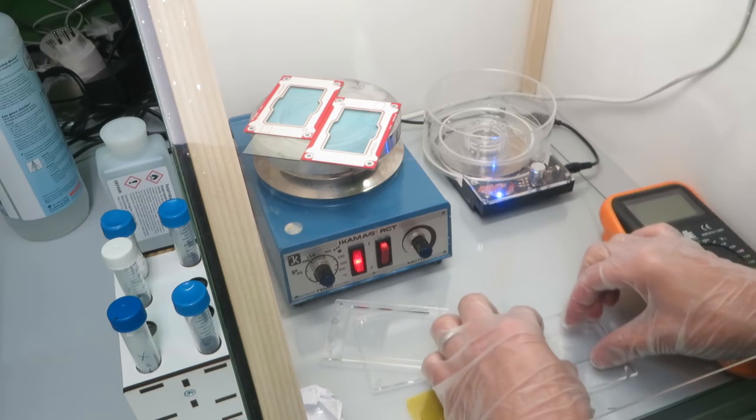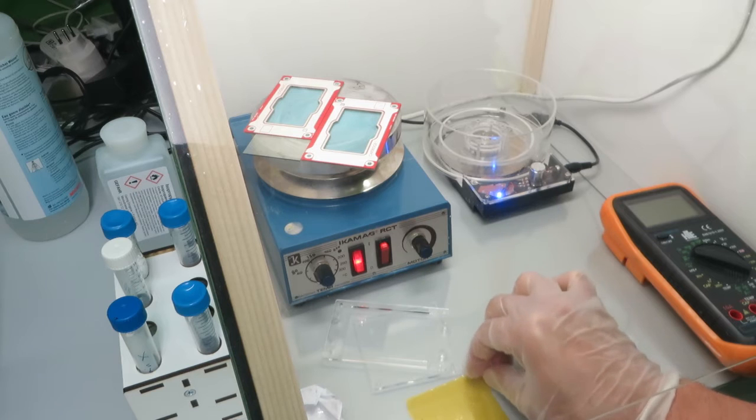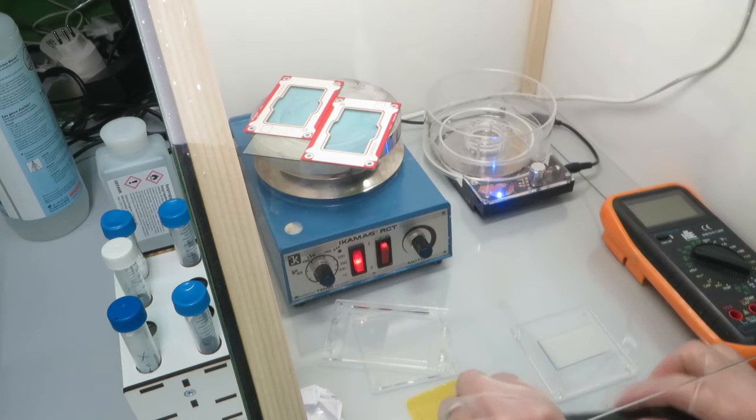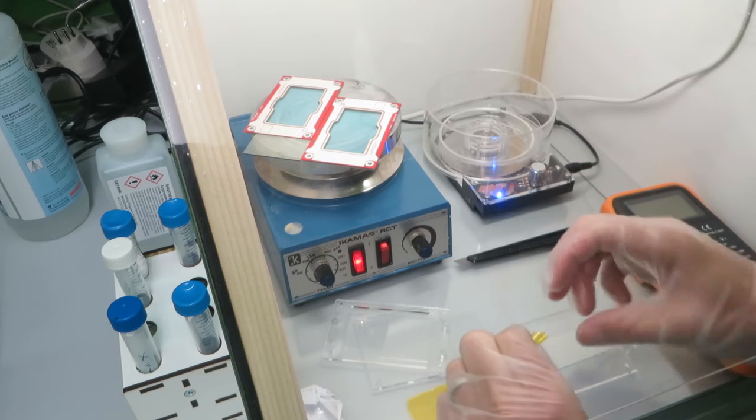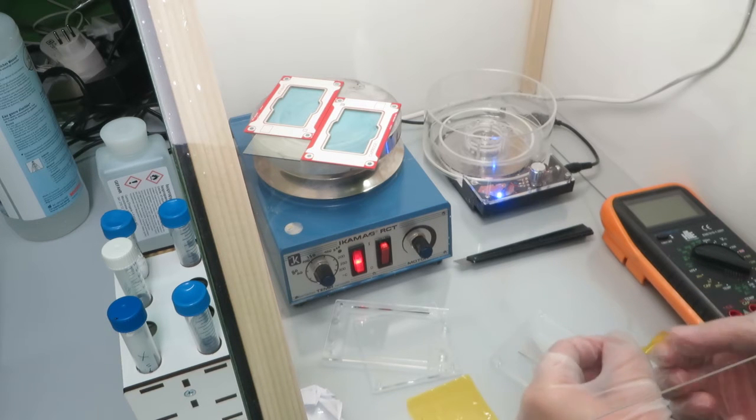Next I attach the glass on a plastic carrier using Kapton tape. This carrier has just the right size to fit into the spin coater and is then more easy to attach to the spin coater.